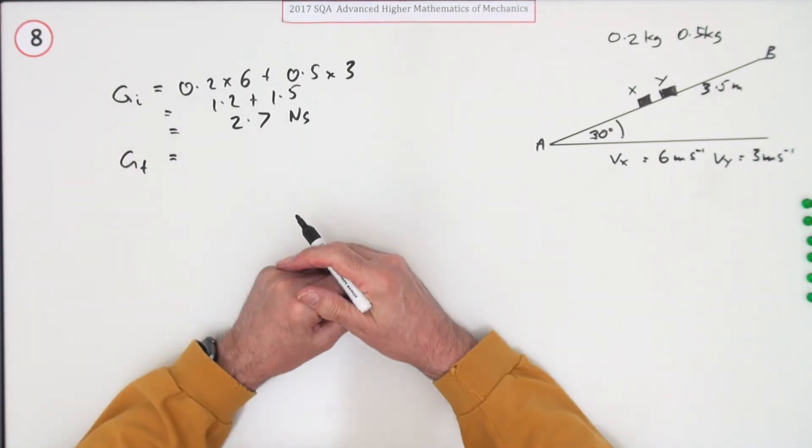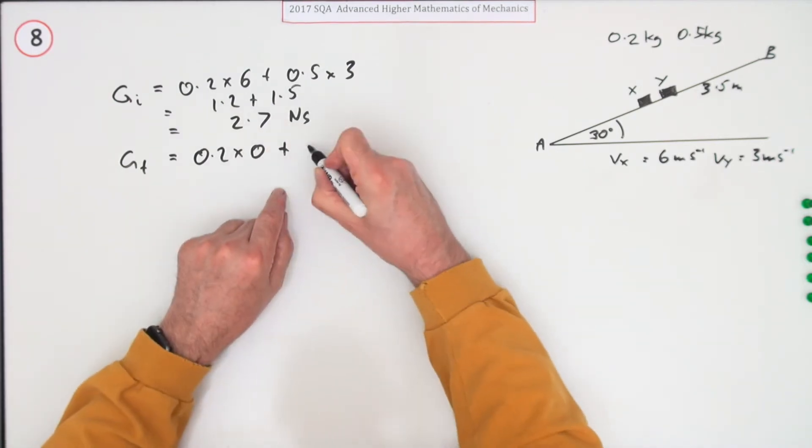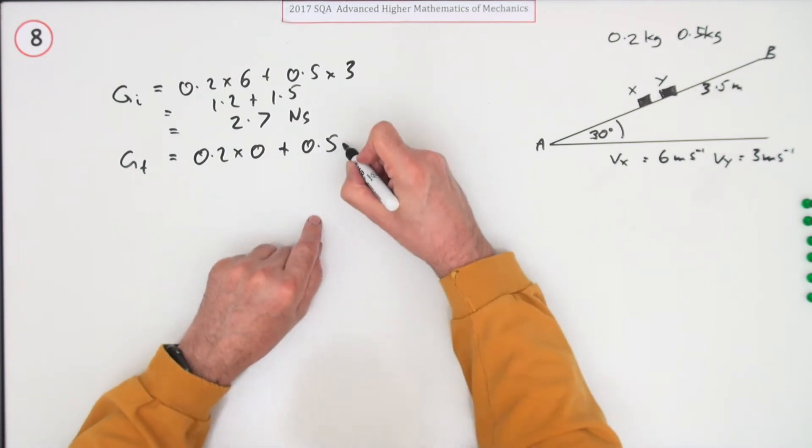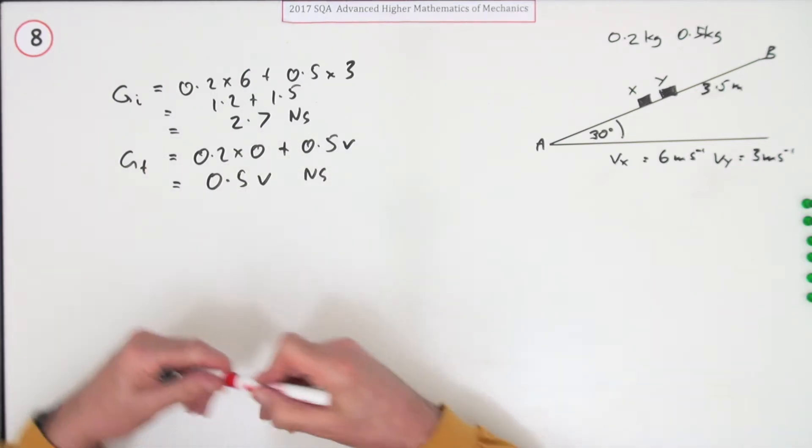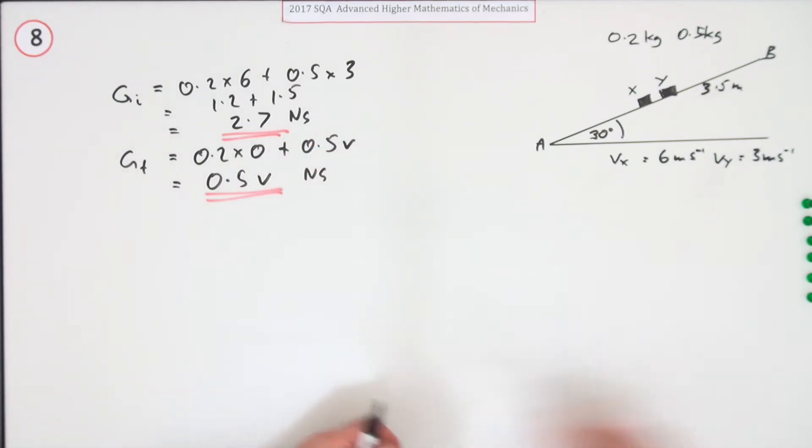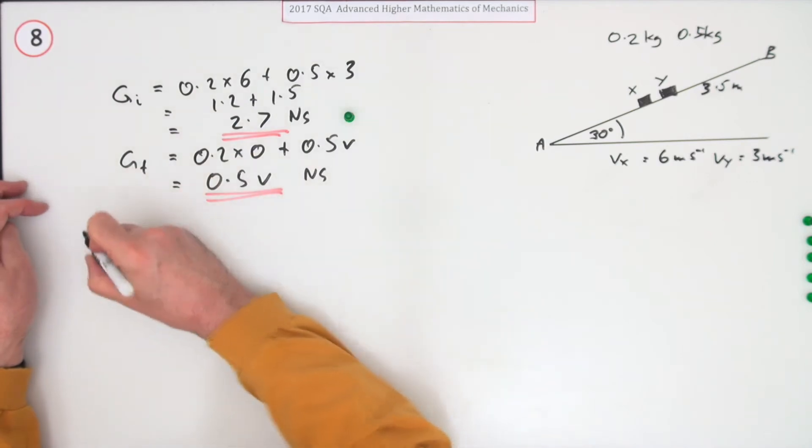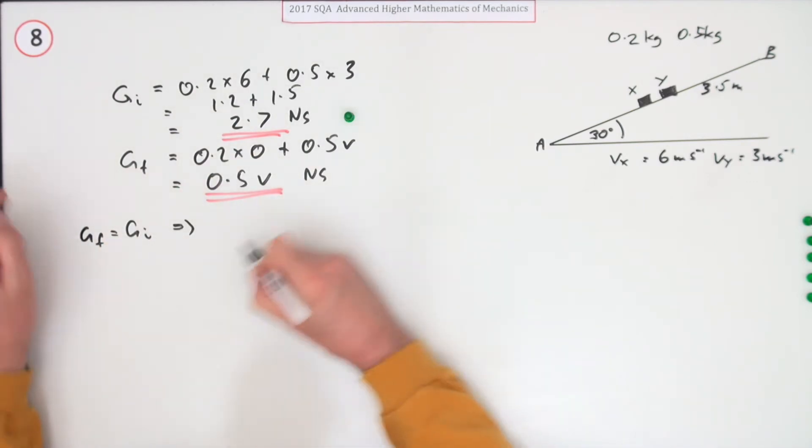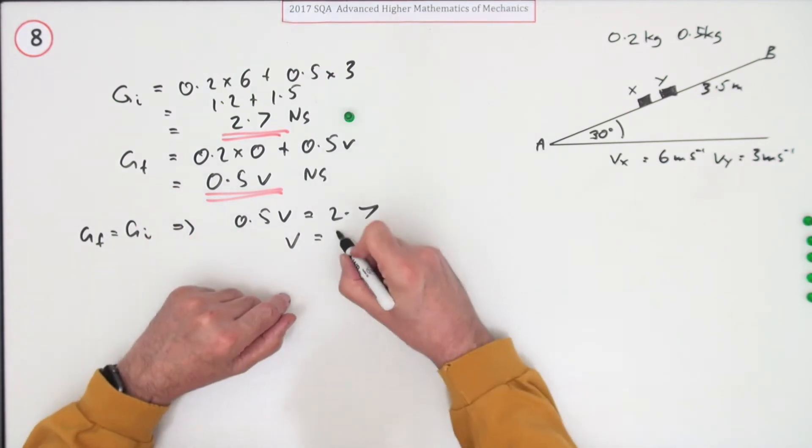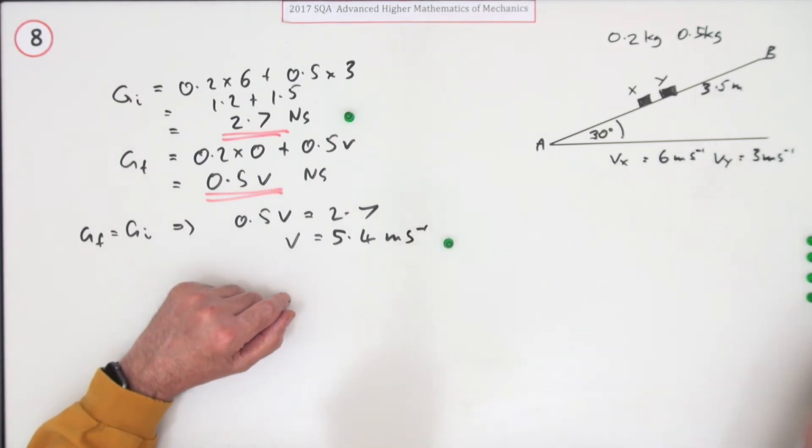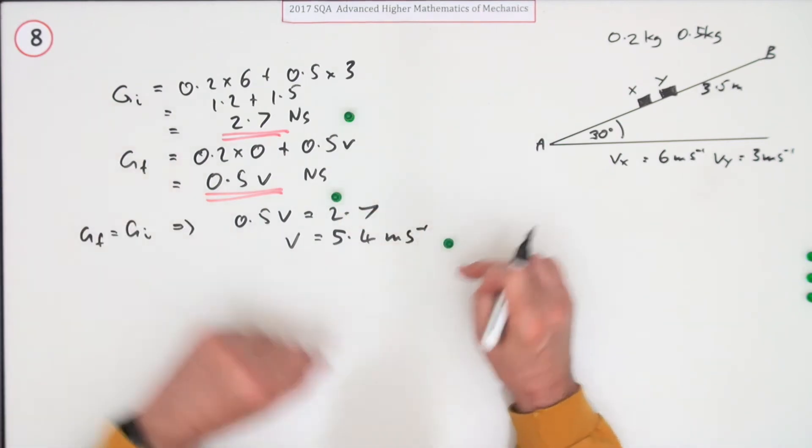What about the final momentum? Well it said X is brought to a rest. So it'll be 0.2 times 0 and then Y carries on at a certain speed so I'll just put V. So it means the final momentum is 0.5V units newton seconds. Now so far there's a mark here. Not quite a mark here. There's a mark once you say well G_i equals G_f which means 0.5V will equal 2.7. So V will be that divided by 0.5. Well that's just double it then isn't it? 5.4 meters per second. Well that wasn't too bad for the three marks.